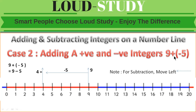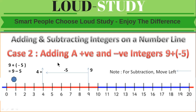Case 2: adding a positive and a negative integer. For example, 9 plus minus 5. Applying the rule, 9 plus minus 5 equals 9 minus 5. Starting at 9, since we are subtracting 5 we move left: 1, 2, 3, 4, 5. Our answer is 4. So we remove the plus and directly write 9 minus 5.